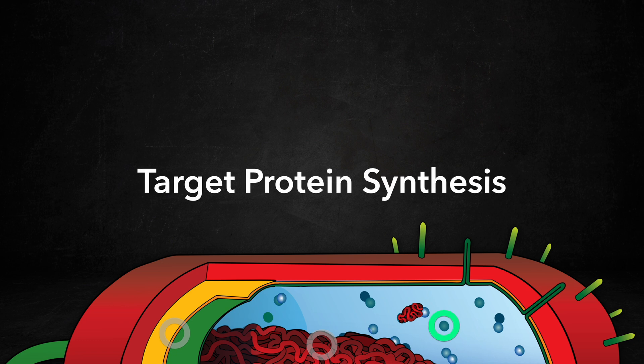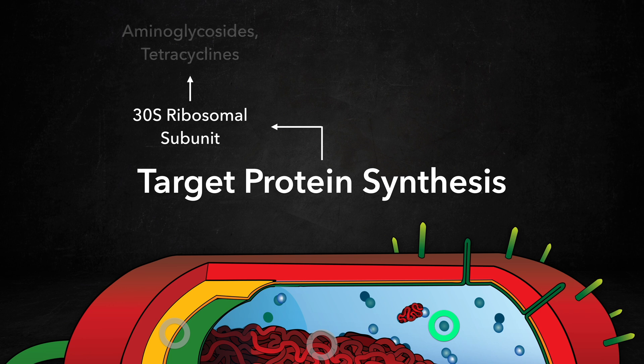The second group includes antibiotics that inhibit protein synthesis. The first subgroup targets the bacterial 30S ribosomal subunit, including the aminoglycosides and tetracycline.